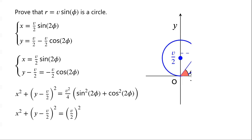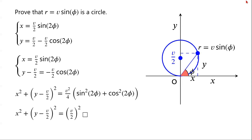This has proved that r equals v·sin(φ) is a circle of radius v/2, centered at the point (0, v/2). The proof is complete.